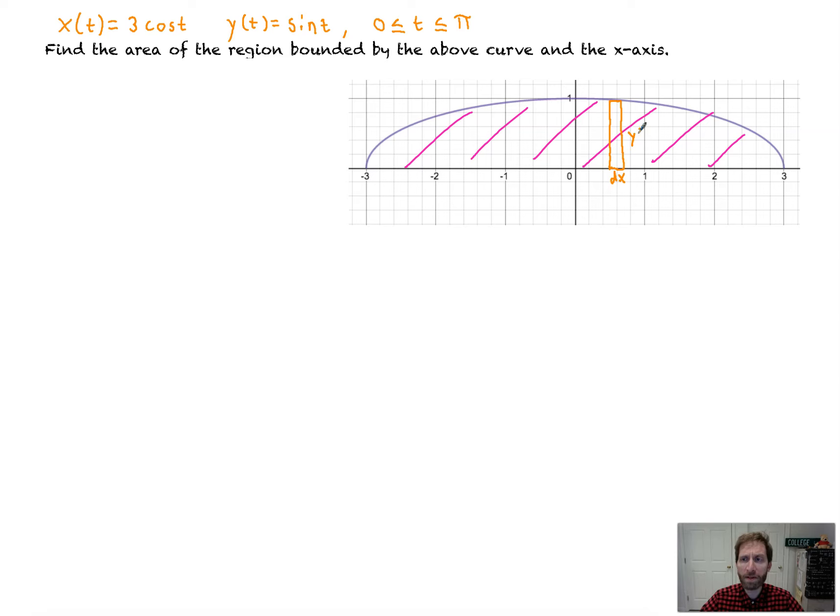But remember, this is parametric. So that's y(t), and this is dx/dt times dt. We're going to multiply those two things together and then add up many of them. So the area of one of those rectangles would be y(t) times dx/dt times dt. From there, we're going to add up many of those over the time interval from 0 to π.